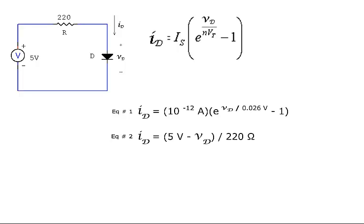A second equation for the diode current can be created using Ohm's law. The current through the diode is equal to the current through the series resistor. Divide the voltage across this resistor by its value of 220 ohms to calculate this current. Now we have two equations and two unknowns.